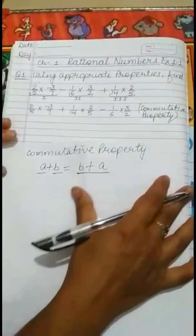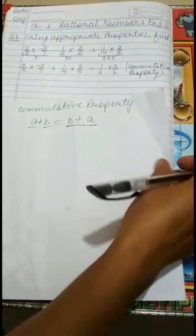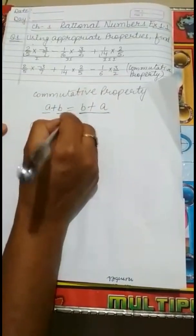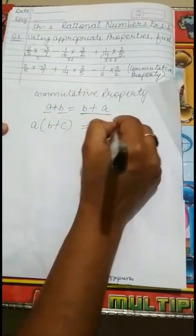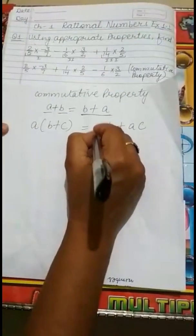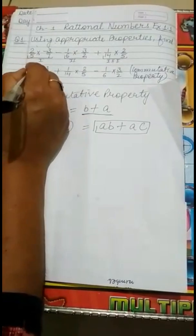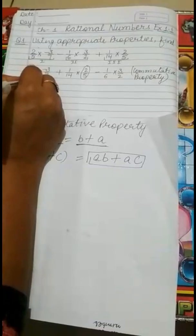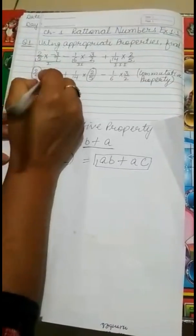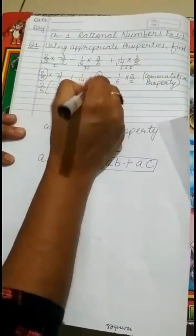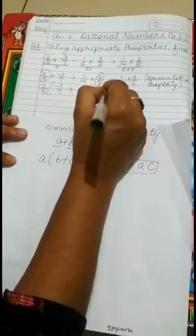That gives us: 2 by 5 multiplied by minus 3 by 7, plus 1 by 14 multiplied by 2 by 5, minus 1 by 6 multiplied by 3 by 2. Now, we also use Distributive Property. Since a·b plus a·c equals a into (b plus c), and 2 by 5 is common in the first two terms, we take 2 by 5 as a common factor, leaving minus 3 by 7 plus 1 by 14 inside the bracket, and the remaining term minus 1 by 6 times 3 by 2.